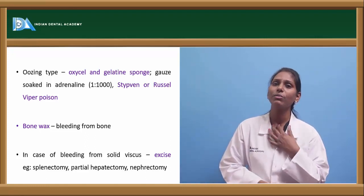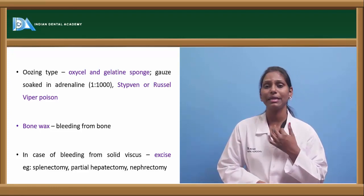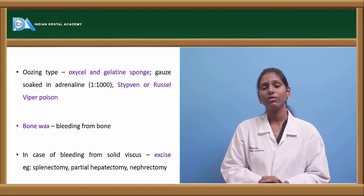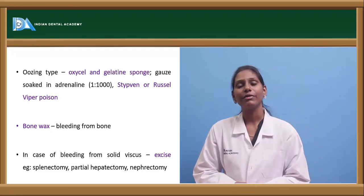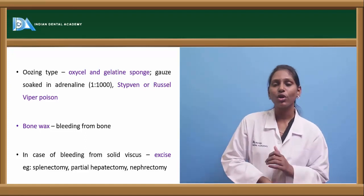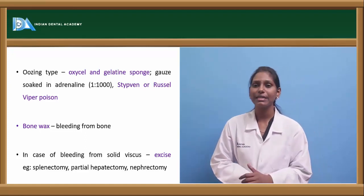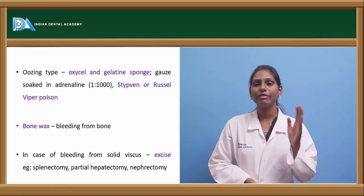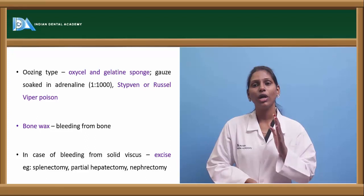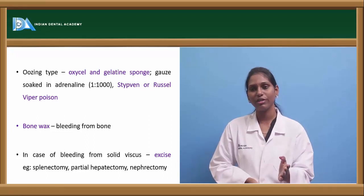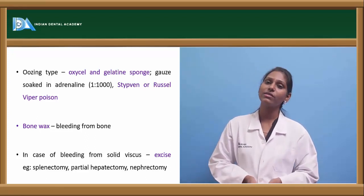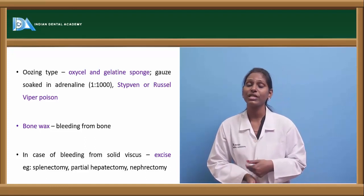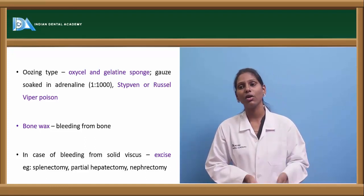A caution with bone wax: it can sometimes cause secondary infection due to granulomatous formation around it. In cases of bleeding from solid organs, excision is indicated — splenectomy for excessive splenic bleeding, partial hepatectomy for liver, or nephrectomy — to stop internal bleeding that could damage other organs.